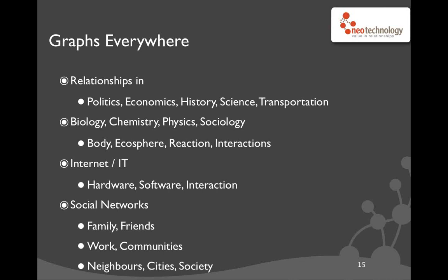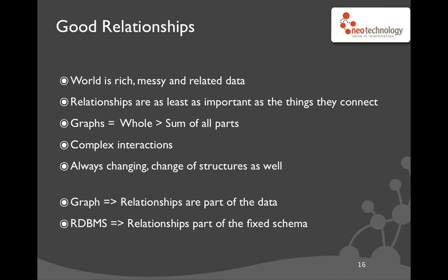You also have social networks — your family, friends, offline social networks, work communities, and even on a larger scale, your society, city, or neighborhood. Wherever you look, it's actually graphs — things connected to each other. Our world is a world of rich and messy data, very interrelated and interconnected. The relationships are at least as important as the things that connect. If you just take the things and remove all the connections, they become useless because you can't reason about them anymore. The graph is actually better than each of the parts.